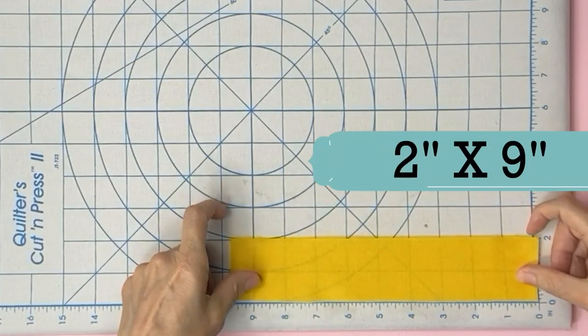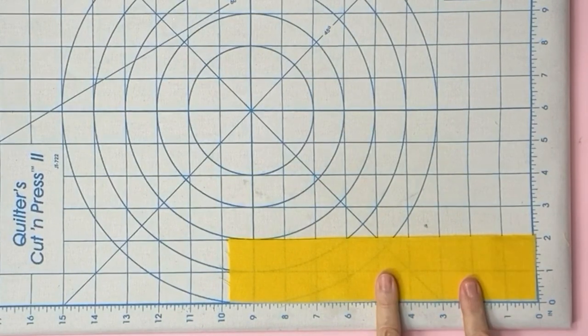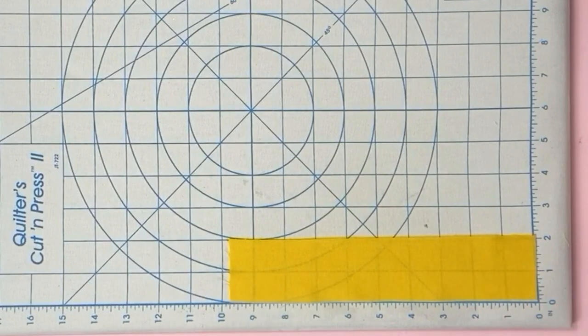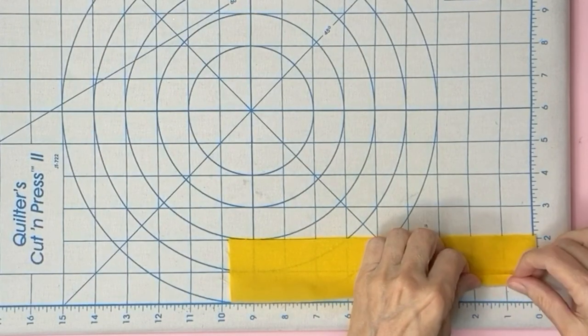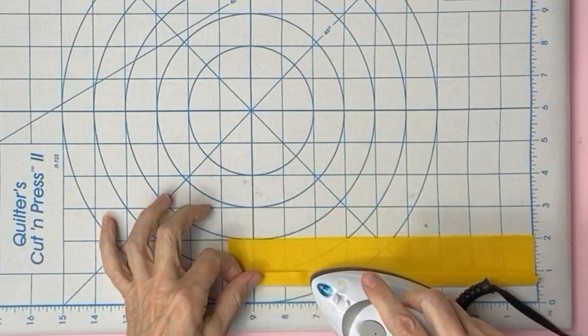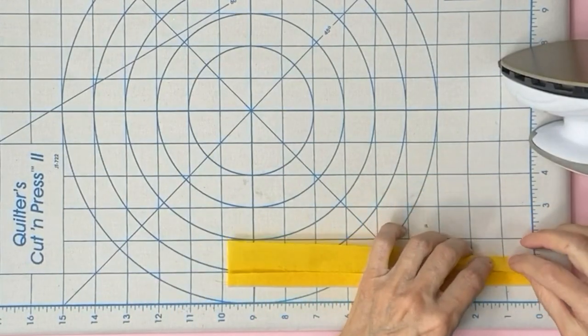You will need to cut a piece of fabric that is two by nine inches. I just noticed that I could easily make a bias tape with this cut and press board because I can see where the one inch line is. Fold your fabric in half an inch and press. Then repeat for the other side.